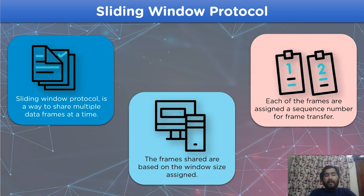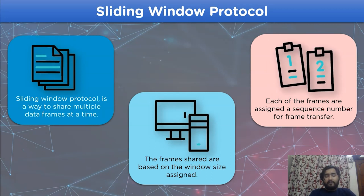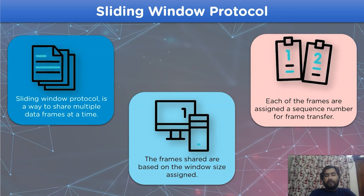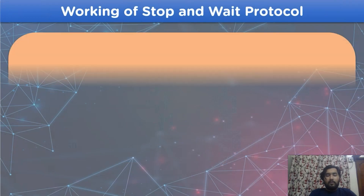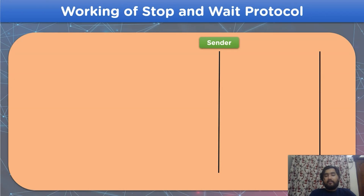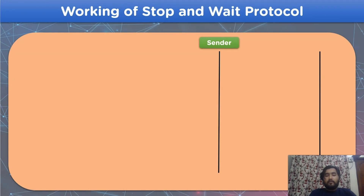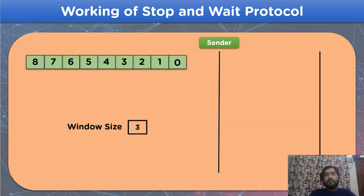We have already learned the definition of the sliding window protocol. Now let's look into the working steps. We have a sender side and a receiver side in the network channel. Each frame is given a sequence number — for this example, we are using 0 to 8, meaning a total of 9 frames are available at the sender side. Using the window size, we determine the number of frames that can be shared at an instance; for this example, the window size is 3.